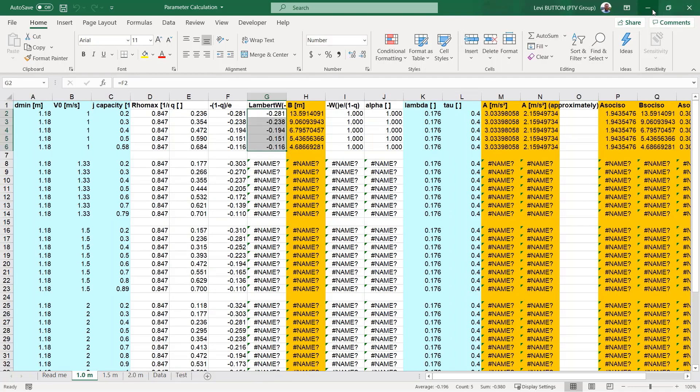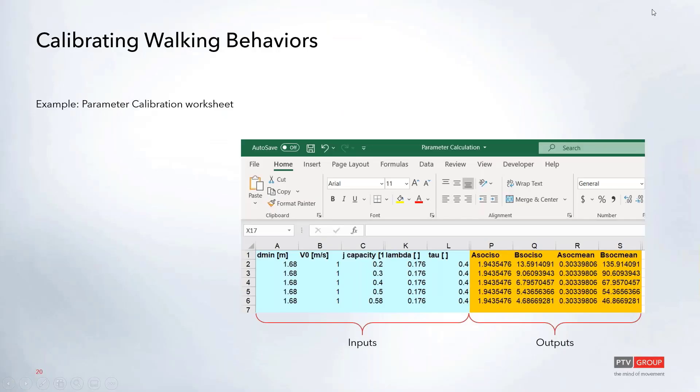So what we'll do is we'll provide this worksheet with the other example files so that you have something to help you with your walking behaviors. But in general, if you want to increase the distance between people or decrease the density, then you need to increase these parameters for the A social and B social parameters to increase those forces between people.